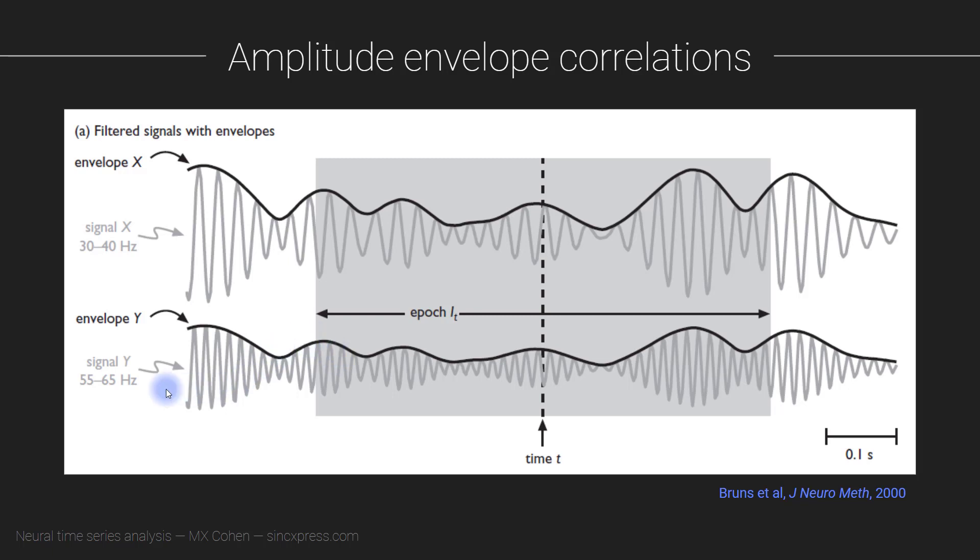So now the amplitude envelope, the power time series, is actually coming from a different frequency. So that's pretty interesting because it gives you more opportunity, it gives you more flexibility for computing connectivity not only between two different electrodes but also between two different frequencies. So therefore you can use amplitude envelope correlations as a measure of cross-frequency coupling because you have coupling across different frequencies.